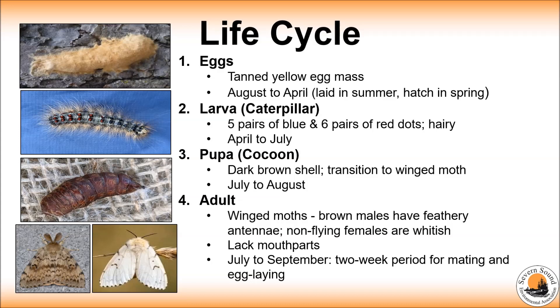The oval egg masses are approximately three to six centimeters long and are covered in tan coloured hairs. They are present on trees, outdoor furniture, buildings and other surfaces from late summer through winter to the following spring.